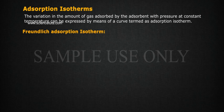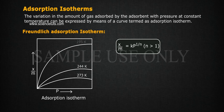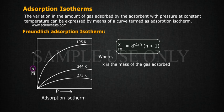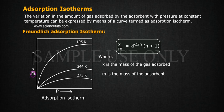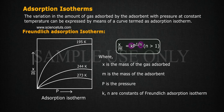Freundlich adsorption Isotherm: X/M = Kp^(1/N), where X is the mass of the gas adsorbed, M is the mass of the adsorbent, P is the pressure, and K, N are constants of Freundlich adsorption Isotherm.